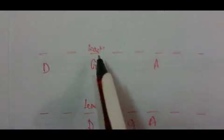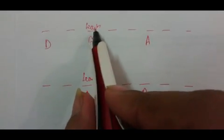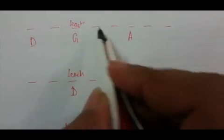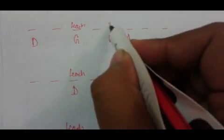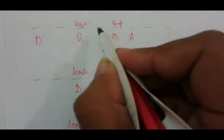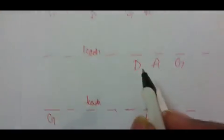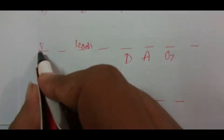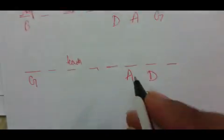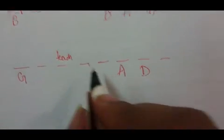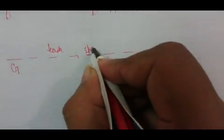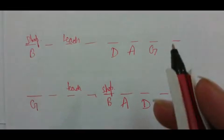Coming to our cases: in the first case, teacher is here and one person sits between B (the shopkeeper) and teacher — this position is already D, so B sits further along as the shopkeeper. In the second case, B sits here as shopkeeper. In the third case, B is placed as shopkeeper. In the fourth case, B is placed as shopkeeper accordingly.